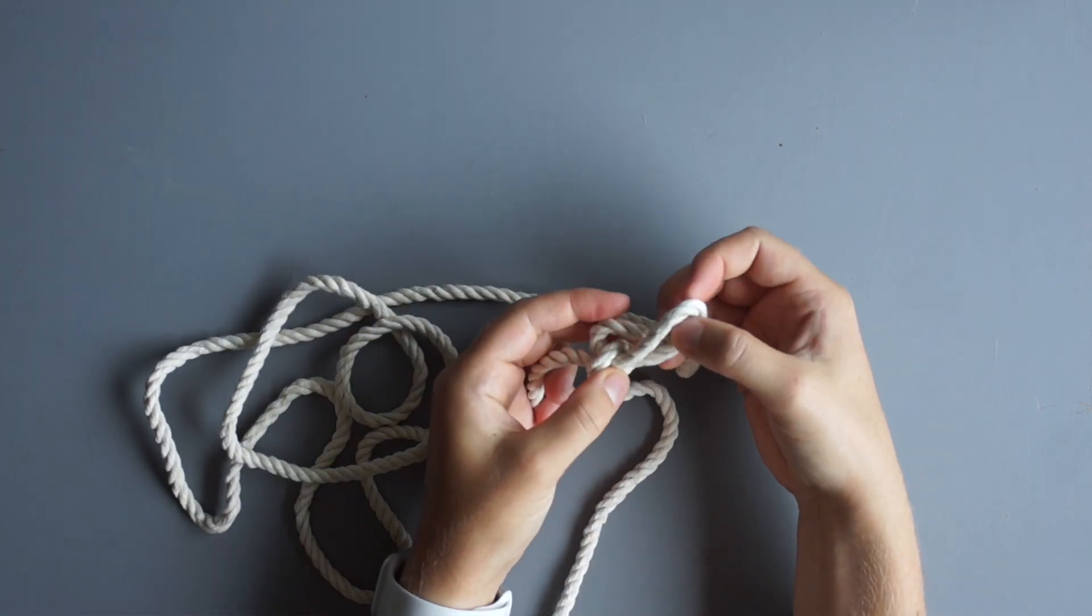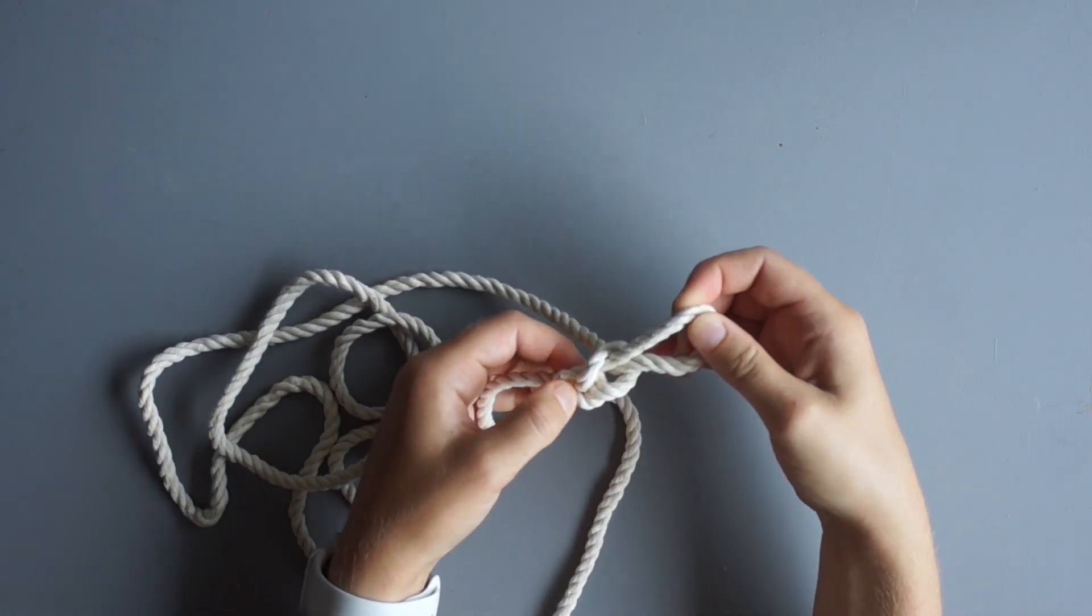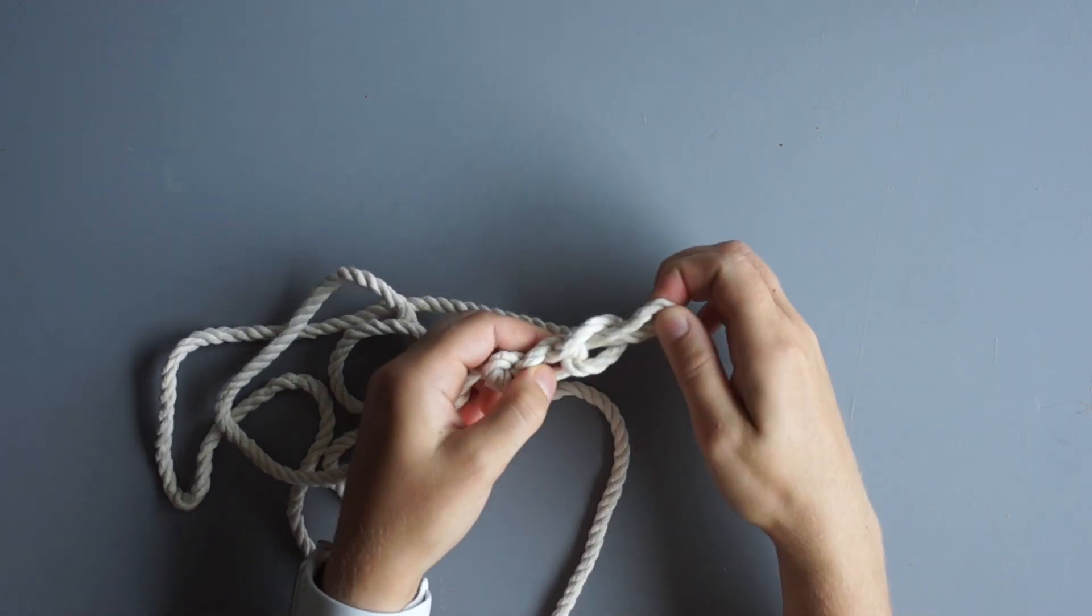Using the long end, pull the cord through the loop to create another loop. Repeat this process until you've created a chain of your desired length.